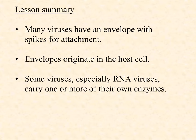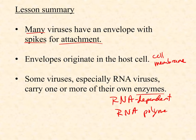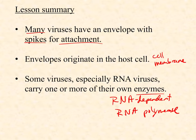In summary, many viruses have an envelope with spikes that are primarily used for attachment, though as we saw with neuraminidase there can be other uses for some spikes. The envelopes originate in the host cell as part of the cell membrane — viruses are literally stealing cell membrane from the host as they exit. Some viruses, especially RNA viruses, can bring one or more of their own enzymes, in particular their own RNA-dependent RNA polymerase. When you watch the video on retroviruses, you'll see they also have to bring their own unusual enzymes because of their unique replication strategy.